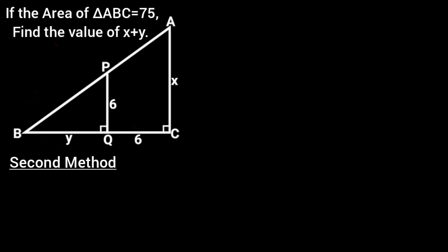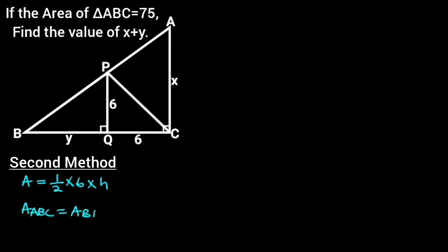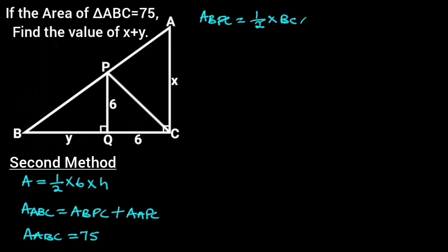Second method. To solve this problem, first let's recall that the area of a triangle is 1 over 2 times base times height. Next, let's draw a straight line from P to C. Observe that the area of triangle ABC equals the area of triangle BPC plus the area of triangle APC. The area of triangle ABC is 75 square units. The area of triangle BPC is equal to 1 over 2 times BC times PQ.